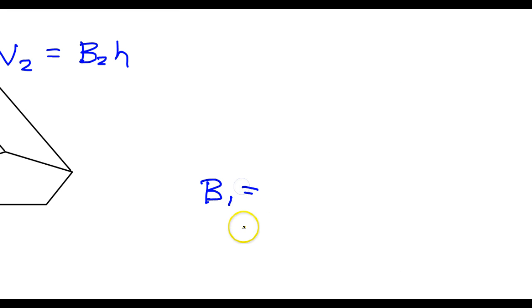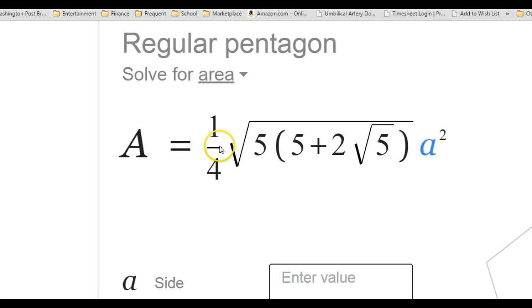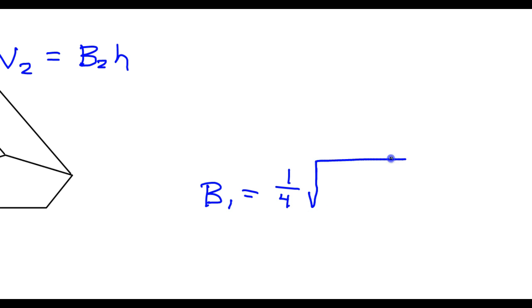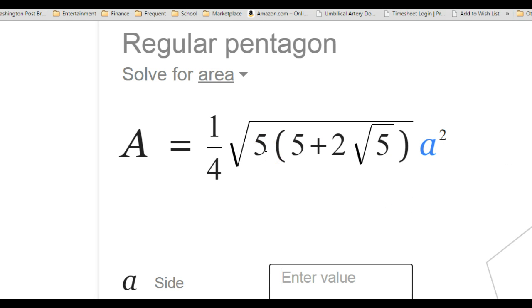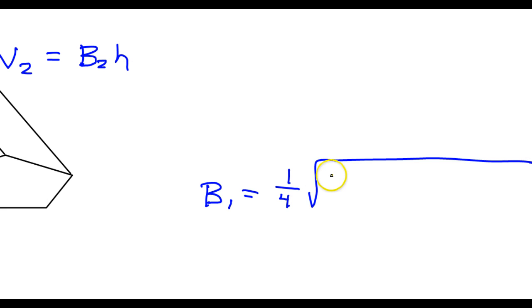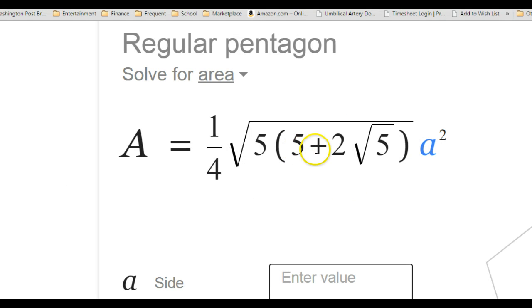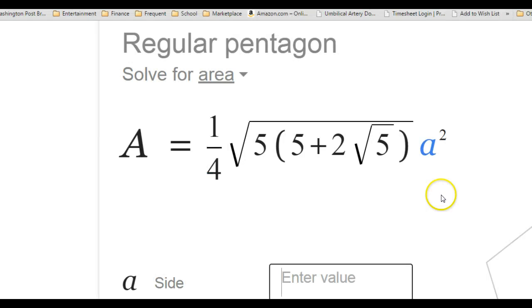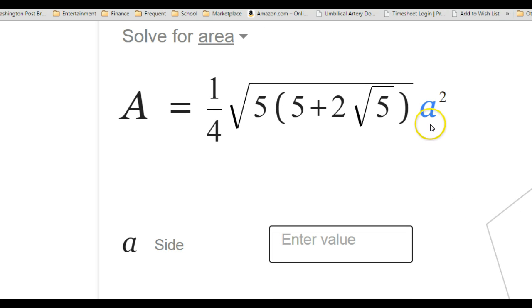So B1 should equal one fourth the square root, 5 times the quantity 5 plus 2 radical 5, times a squared. I wonder if this a squared is supposed to be under the radical or not. I wish they wouldn't do that.